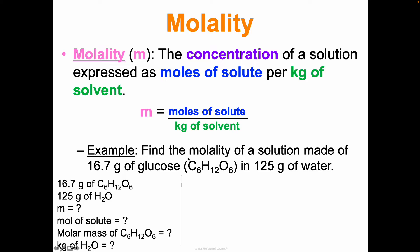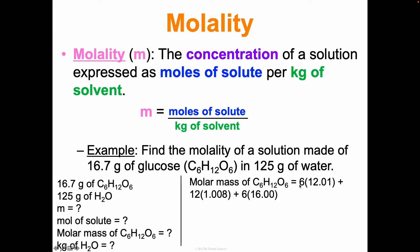Let's find the molar mass of glucose. Six carbons, each with a molar mass of 12.01. Plus 12 hydrogens multiplied by 1.008 - that's the molar mass of one hydrogen atom. Then six oxygens, each with a molar mass of 16.00. Multiply, multiply, multiply, then add up those sums, and you get a molar mass of 180.16 grams per mole.